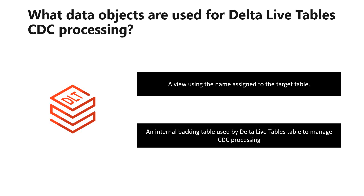What data objects are used for a Delta Live table CDC processing? When you declare the target table, two data structures are created in Hive Metastore: a view using the name assigned to the target table, and an internal backing table used by Delta Live table to manage CDC processing.